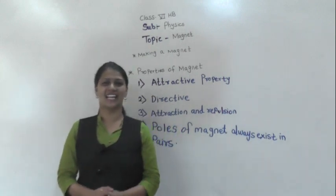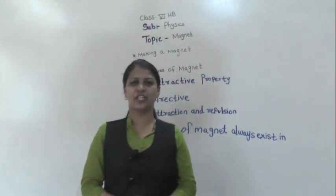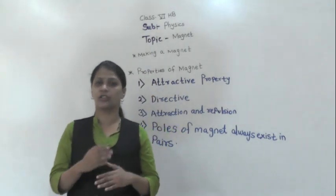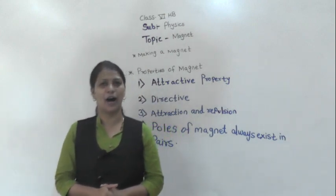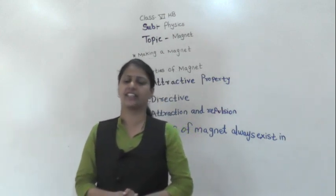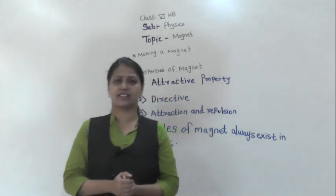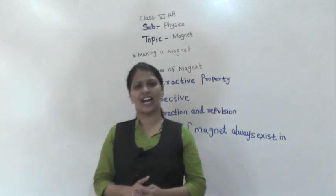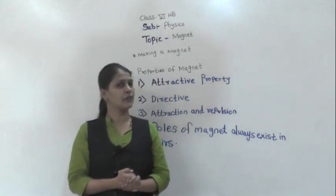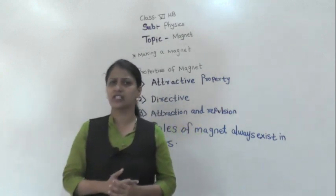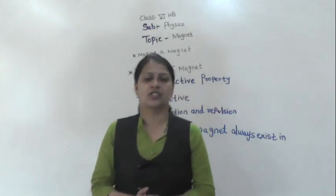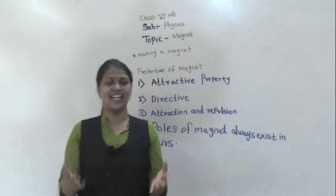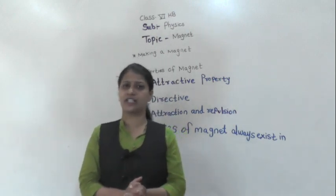Good morning, dear students. Let's start with our physics lecture. In the last video we discussed magnetism — how the magnet was discovered, then we discussed natural and artificial magnets, then the materials which attract a magnet, called magnetic materials, while materials which do not attract towards a magnet are called non-magnetic materials. For example, a plastic scale will not attract towards a magnet because it does not contain the property of a magnet. We discussed this in the last video.